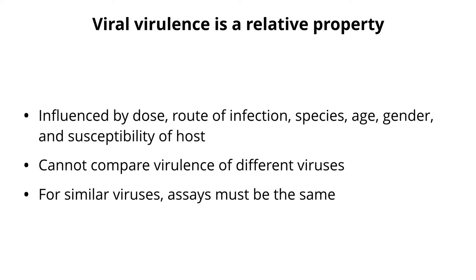This property — virulence — is relative; it is influenced by many parameters: the dose of virus, the route of infection, whether you put virus directly into the brain versus peripherally, the species used, the age, the gender, susceptibility of the species, and many other parameters as well.